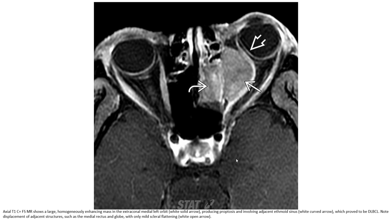This is an axial T1C plus fat-saturated MRI showing a large homogeneously enhancing mass in the extra-conal medial orbit producing proptosis and involving the adjacent ethmoid sinus, proven to be diffuse large B-cell lymphoma. Note the displacement of adjacent structures such as the medial rectus and globe with only scleral flattening, as seen in the image.